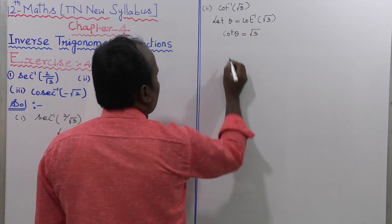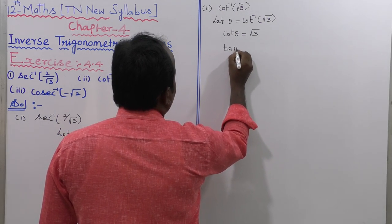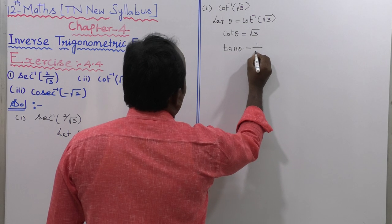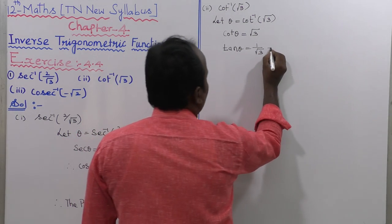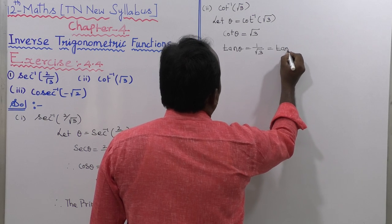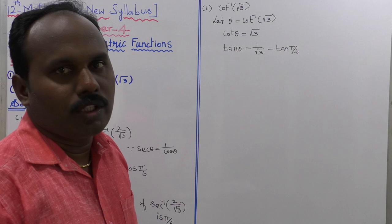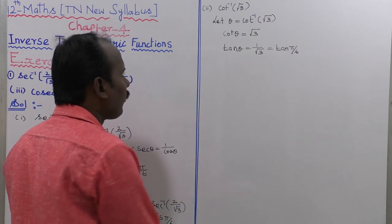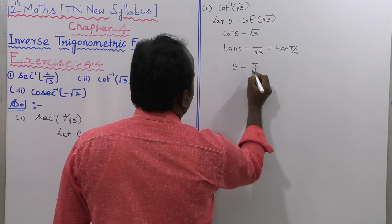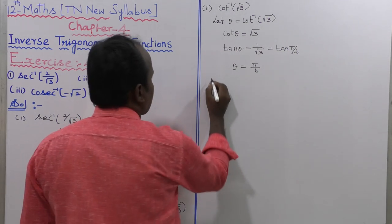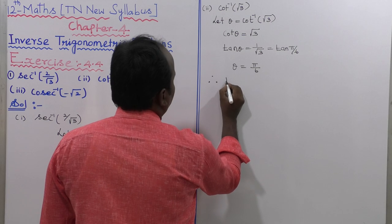Cot theta equals root 3. Therefore tan theta equals 1 by root 3, which equals tan of pi by 6 — that is 30 degrees gives 1 by root 3. So theta equals pi by 6.